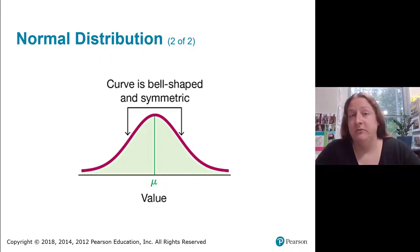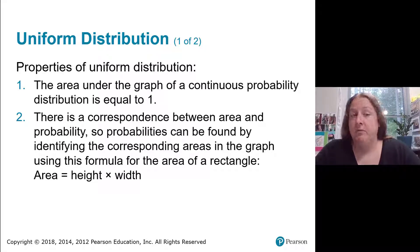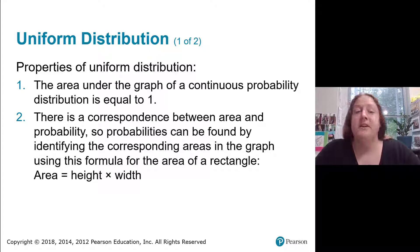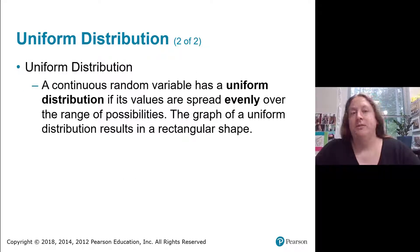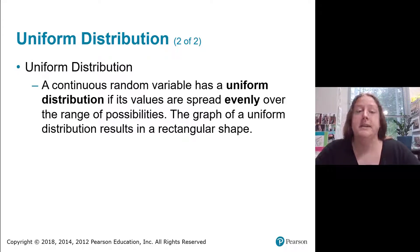Before we discuss the normal distribution further, let's talk about the uniform distribution. A key property is that the area under the graph of a continuous probability distribution is equal to one. There's also a correspondence between area and probability — probabilities can be found by identifying corresponding areas in the graph using the formula for the area of a rectangle. A continuous random variable has a uniform distribution if its values are spread evenly over the range of possibilities, resulting in a rectangle shape.